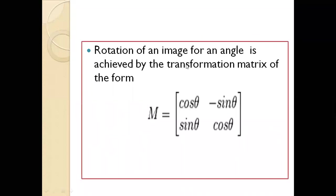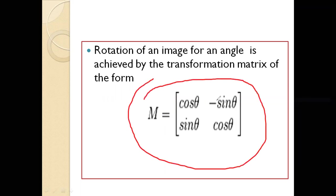Rotation of an image for an angle is achieved by a transformation matrix of this form: M equals cos theta, minus sine theta, sine theta, cos theta. You have to remember this if it is a theory-based examination.